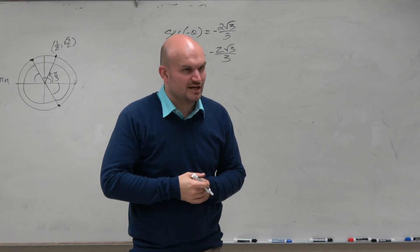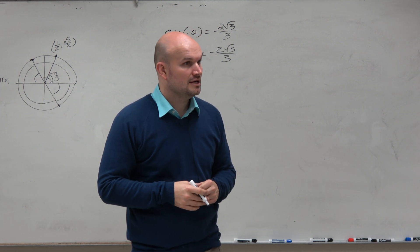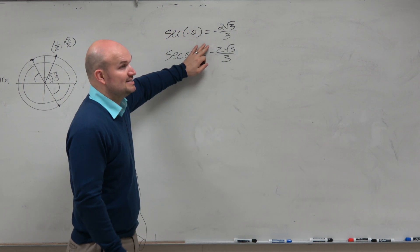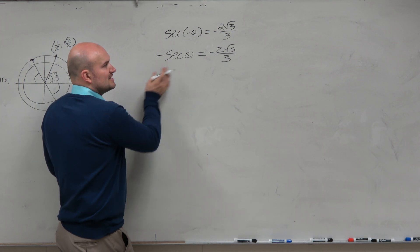By me giving you that, it's just really to kind of trick you. See if that can be confusing to you, if you know your identity or not. Because all the other identities, this would be a negative. All the other ones would be negative, except for secant and cosine.